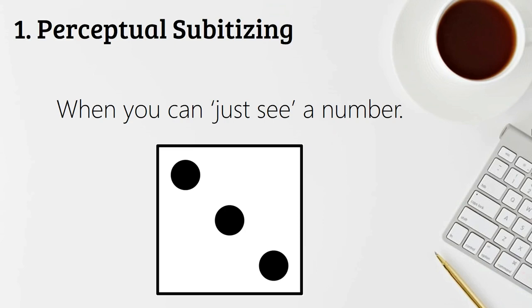So that grows over time. So if you're looking at a dice, you see the three dots on the dice, you know that's three, you didn't count the dots on the dice. That would be perceptual subitizing. Yes.